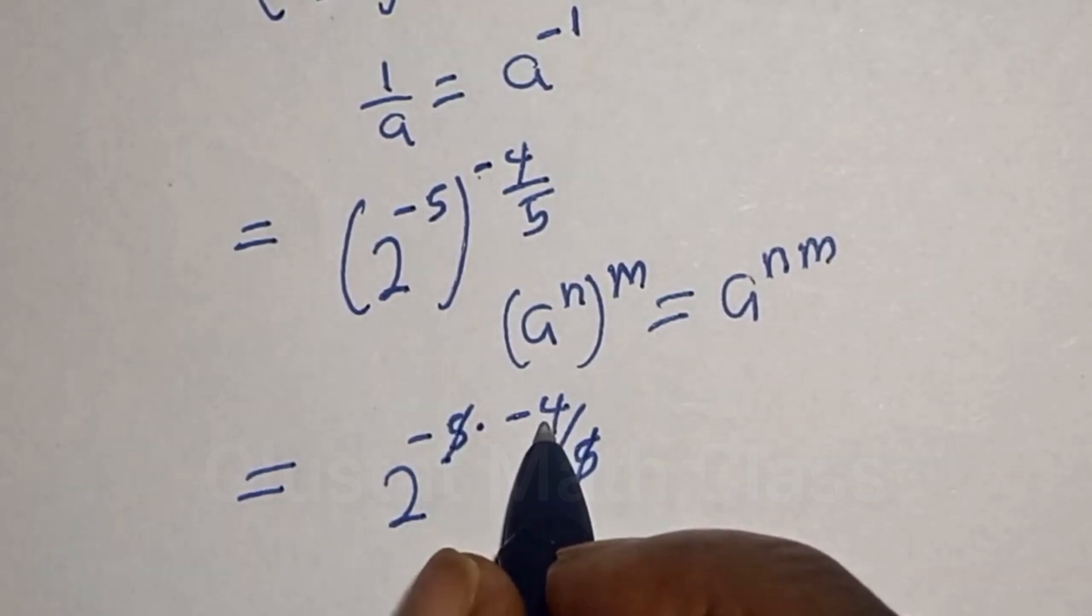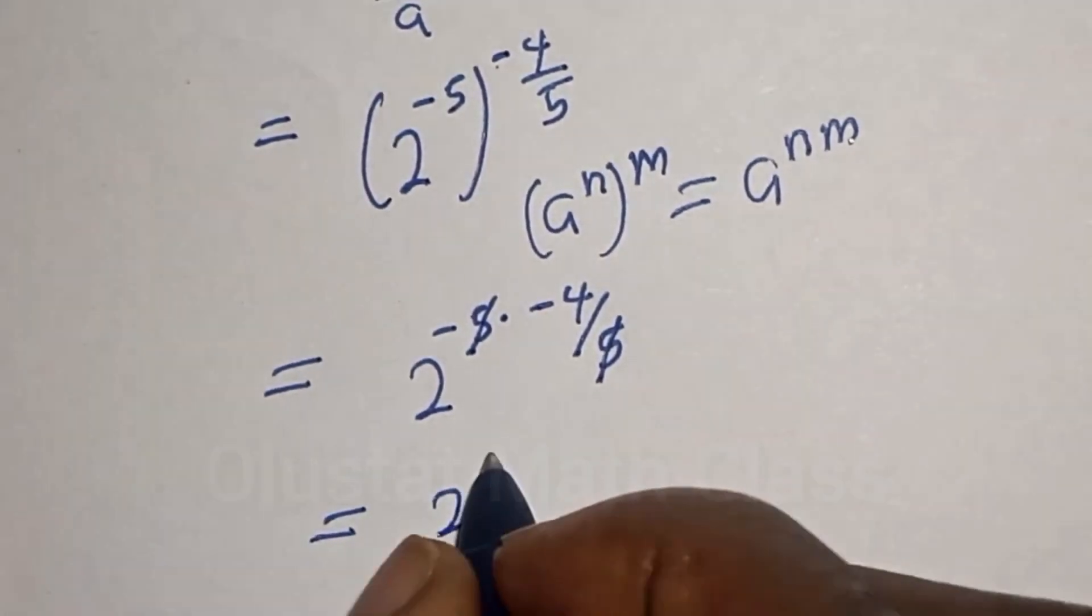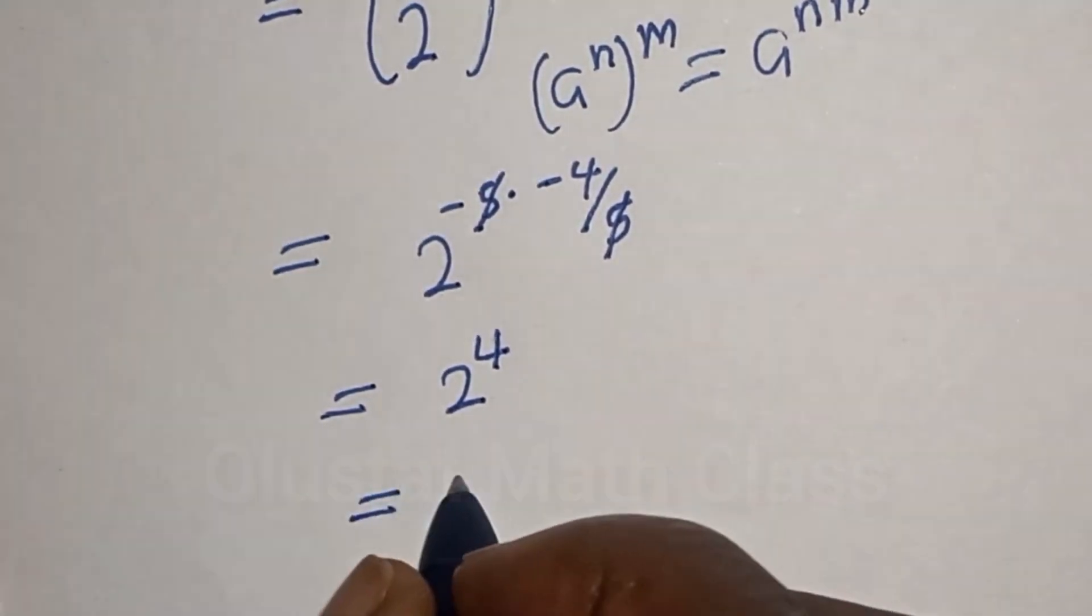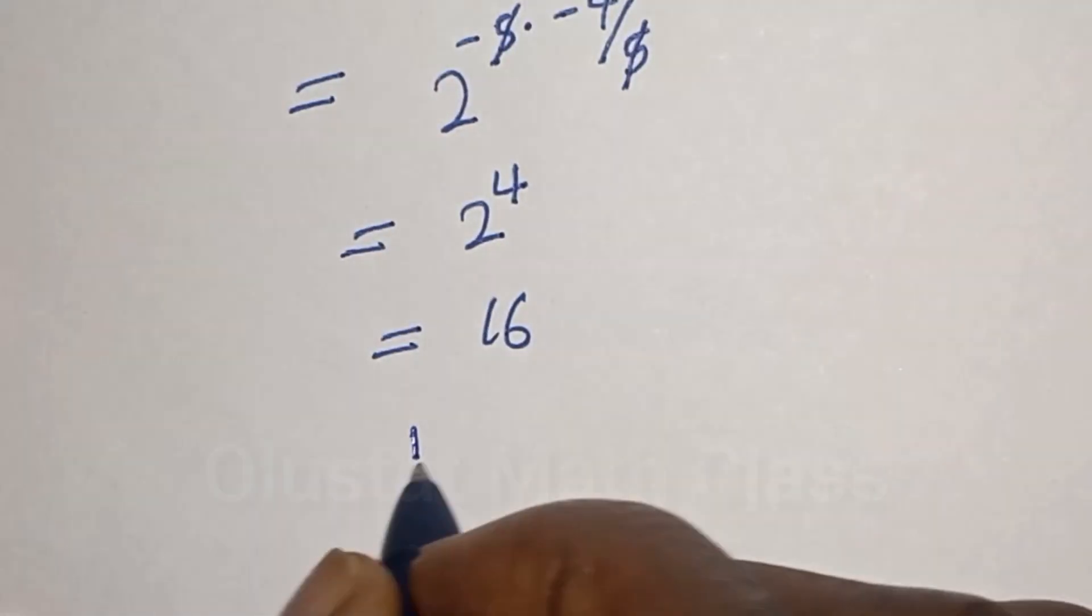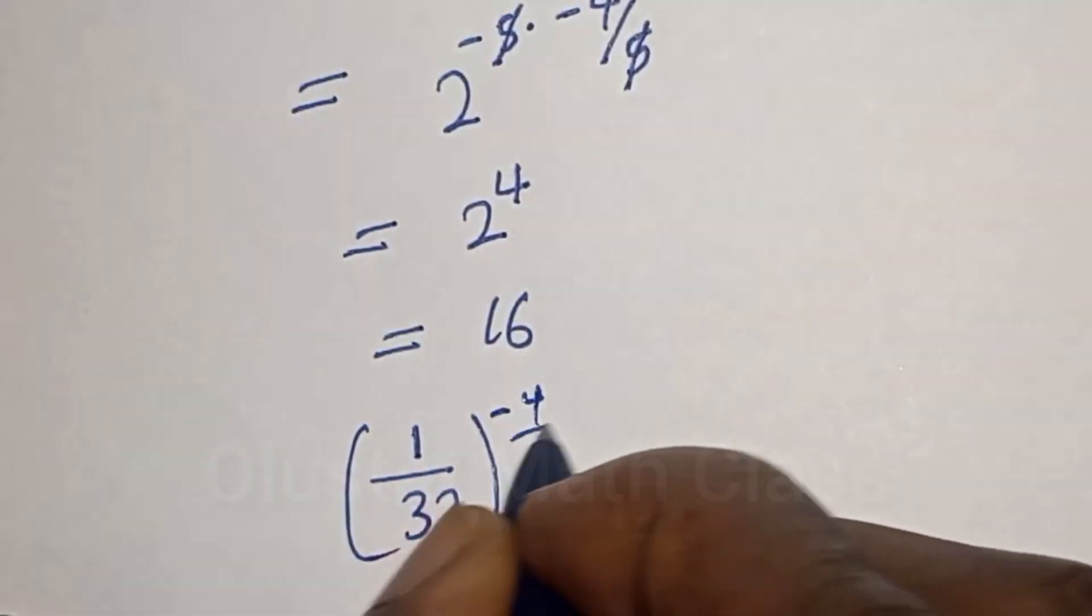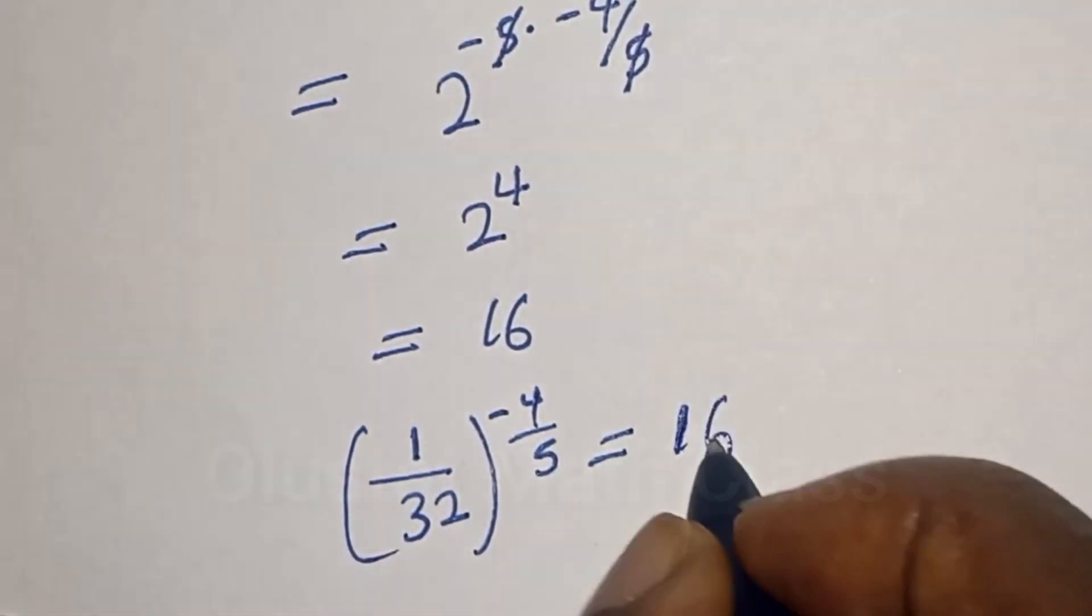This is equal to 2 raised to power 4, and 2 raised to power 4 is equal to 16. Therefore, 1 over 32 raised to power minus 4 over 5 is equal to 16.